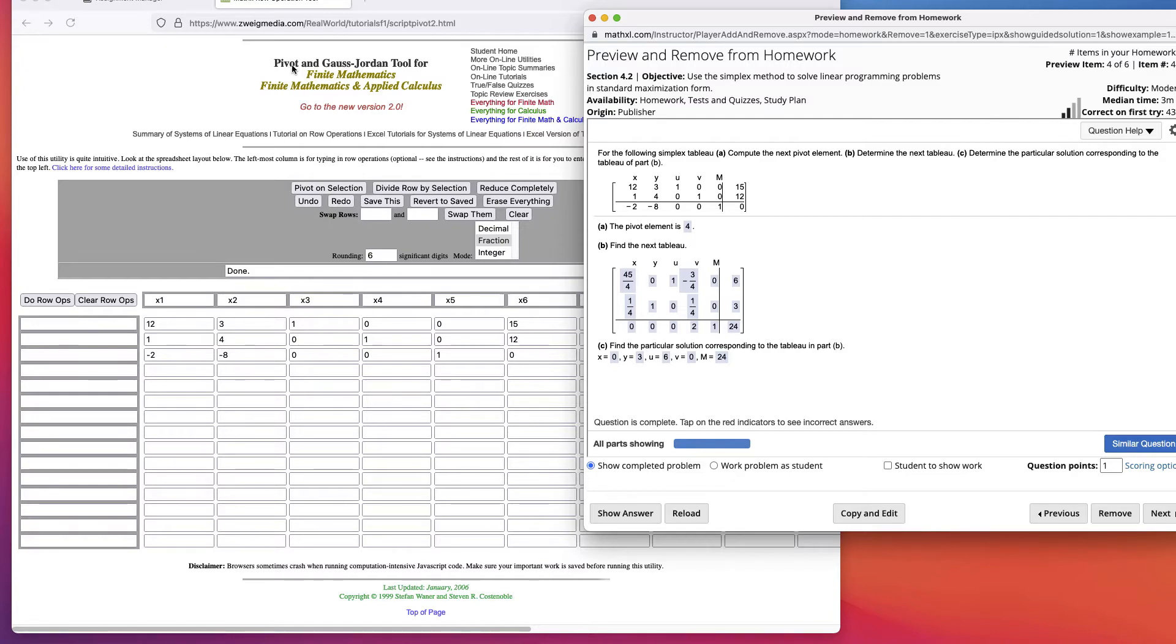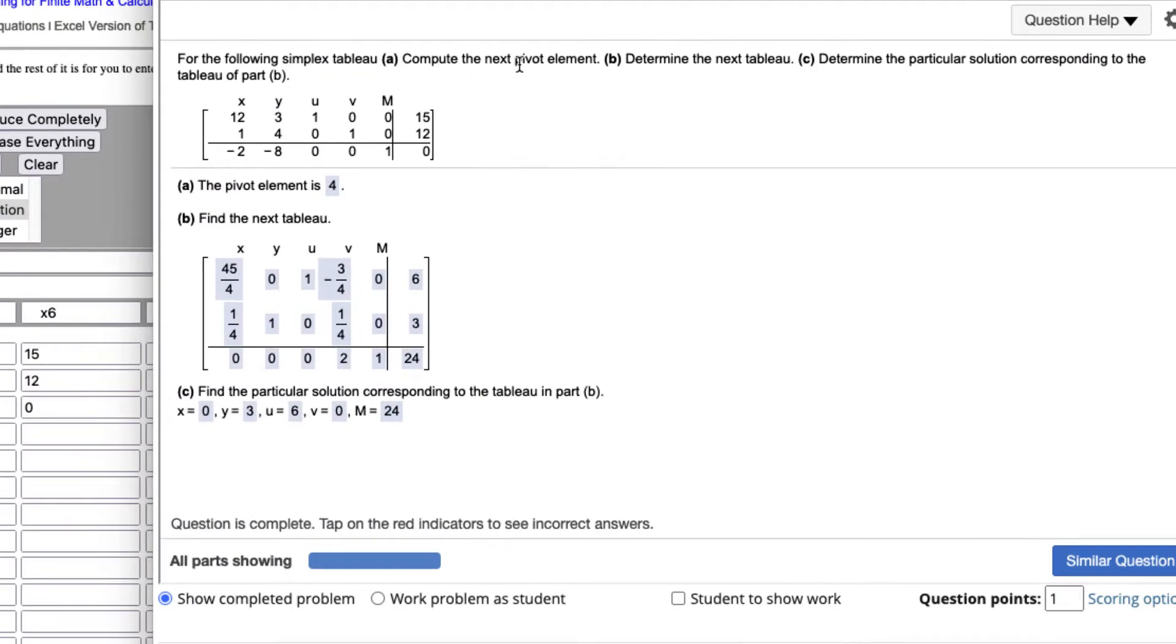Okay, let's look at an example on how to use this pivot calculator. Over here we have Simplex Tableau, and they want to know to compute the next pivot element, determine the next tableau, and then the particular solution.